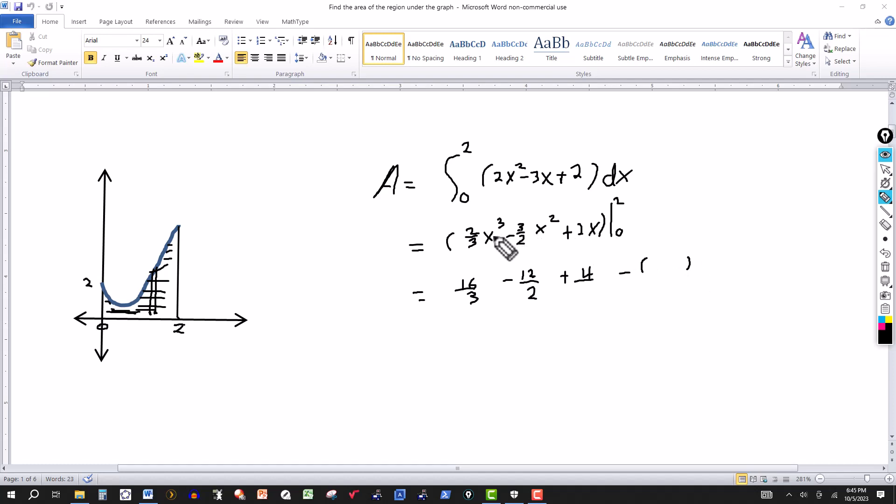This is minus the value at 0. Everything has an x, so putting 0 gives 0. This equals 16/3, this is -6 here, 12 divided by 2, and plus 4. Getting the common denominator: 16/3, -6 over 3, that gives 10 over 3.